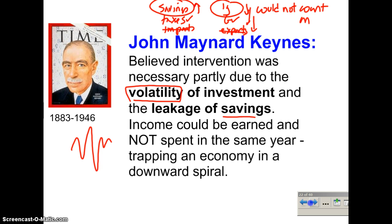Keynes made a very important observation: income can be earned and not spent in the same year. People can save, and that money isn't spent by them and it's also not spent by businesses — so it's just not spent at all. The economy ends up in a downward spiral.